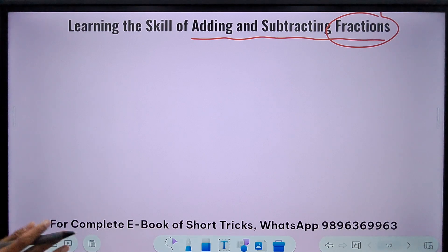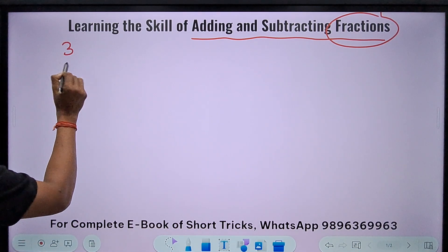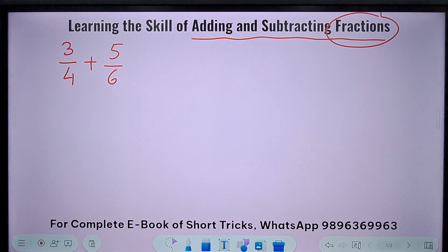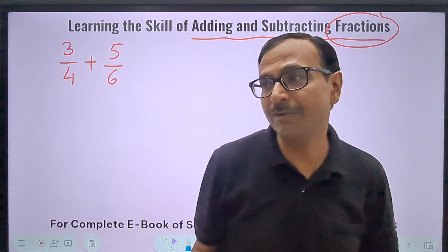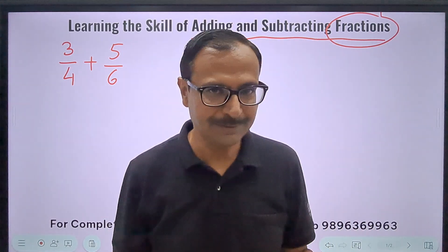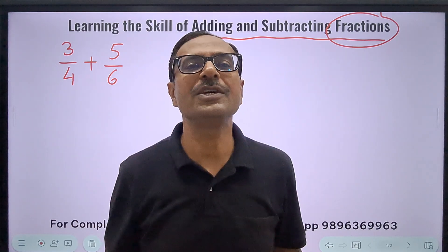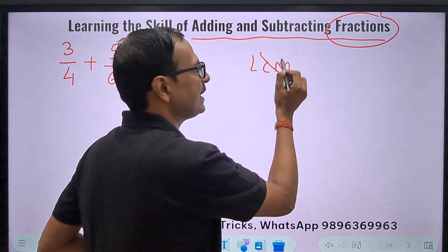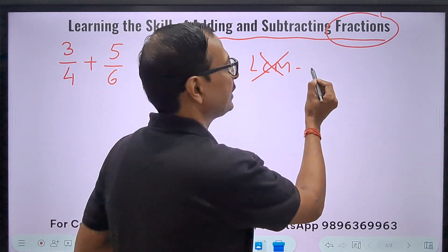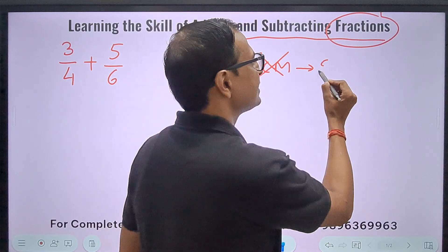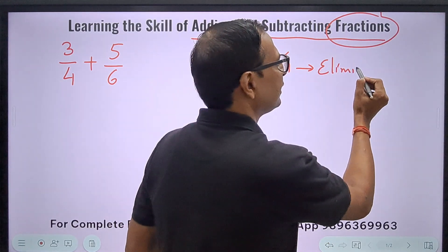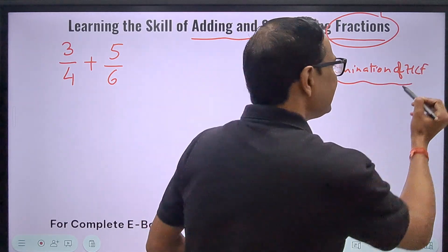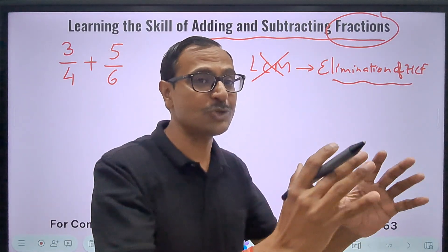Let's see the first example which I'm going to take up, a very simple example so that you will learn the concept first. Suppose I need to add 3/4 and 5/6. Now what will most of the students do? Even the ninth and tenth class students will do the LCM of 4 and 6, which is 12, eliminating the highest common factor, HCF. Now if you don't want to find the LCM, what do you have to do? This has to be replaced by something.